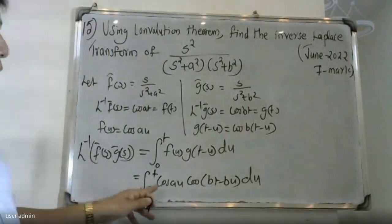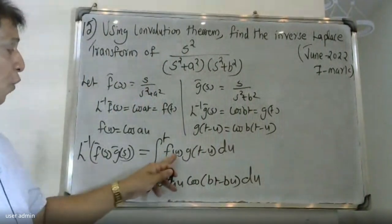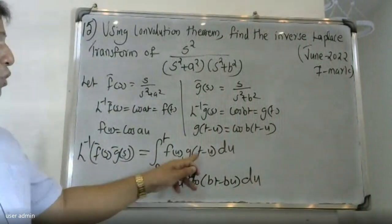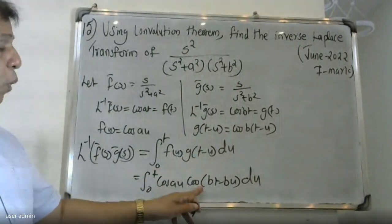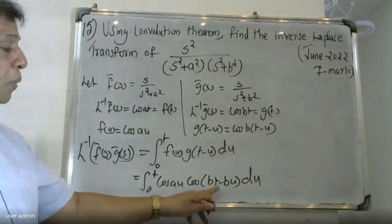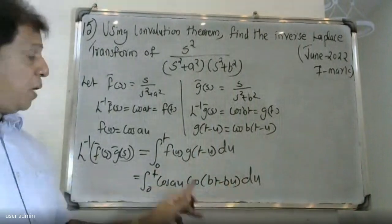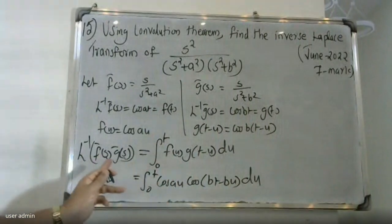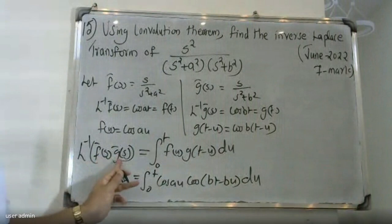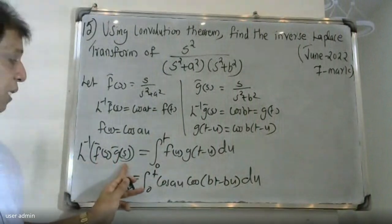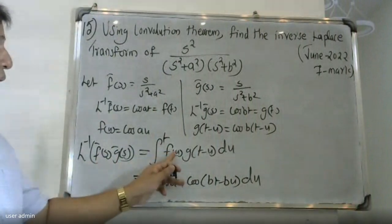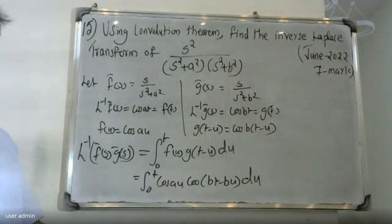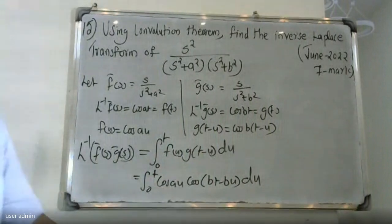So the expression becomes integral from 0 to t of cos(au) · cos(bt − bu) du. Now simplify this using the product-to-sum trigonometric identity.